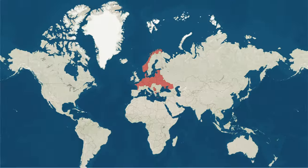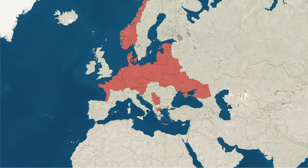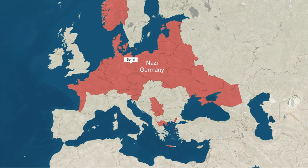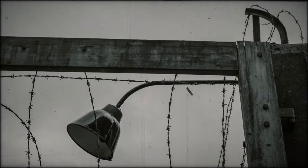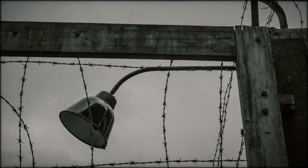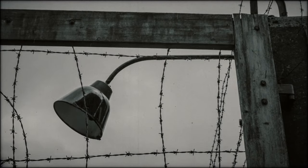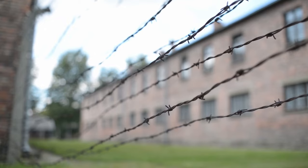In Nazi Germany, eugenics became a central part of the government's policies, with the goal of creating a pure Aryan race. The Nazis believed that the German people were superior to all other races and that the Aryan race was the pinnacle of human evolution.